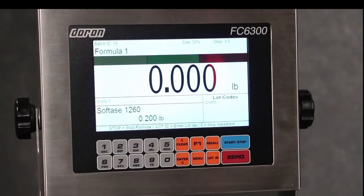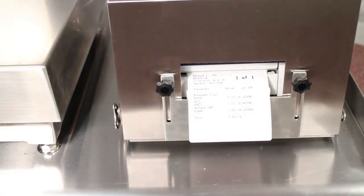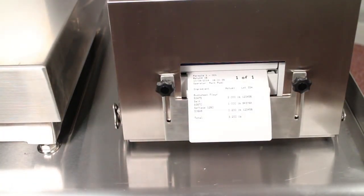I'll continue with the batch scaling process now. Once the final ingredient has been scaled, the message Batch Complete is shown on the display. And since we have a printer attached, a batch label is automatically printed.